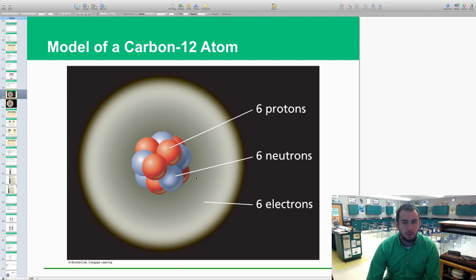This is just looking at a model of carbon-12 atom. Obviously, you see six—the protons are in red, neutrons are in blue, and this electron cloud represents six electrons there.